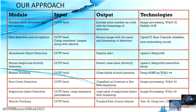There are seven main modules in our solution. For each and every module, the input is a live feed. For the number plate detection and recognition module, the basic technologies used are image processing, YOLO version 5, and PaddleOCR.